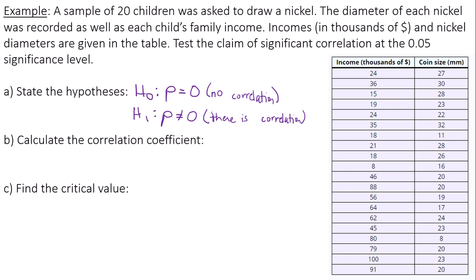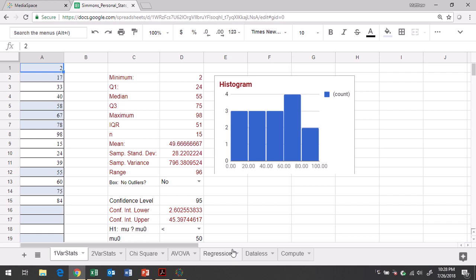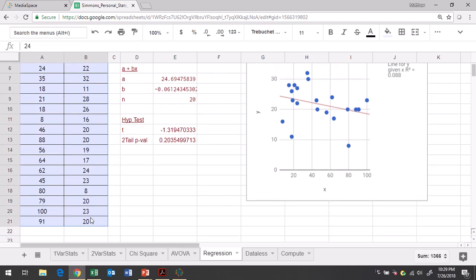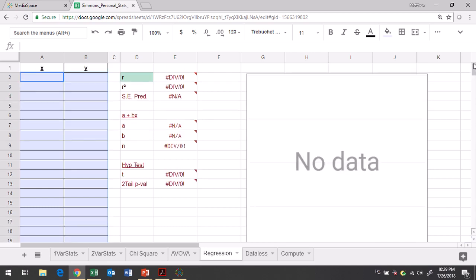Let's calculate the correlation coefficient. We do that using Google Sheets. You do not want to do it by hand. In Google Sheets, we'll go to the regression tab and we're going to clear out any data that's already there.